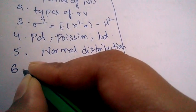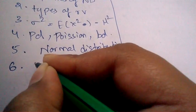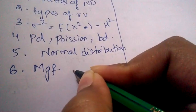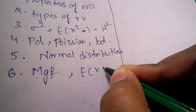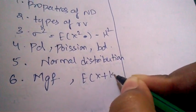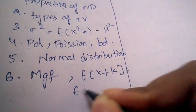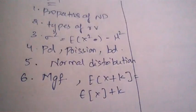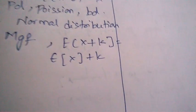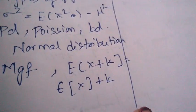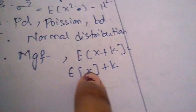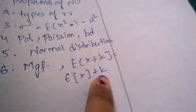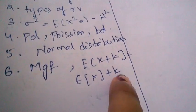What is moment generating function? And another important question: prove that E of x plus k is equal to E of x plus k, where k is a constant.